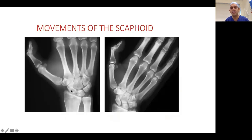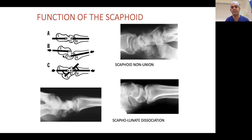Regarding movements and function: as you go from radial deviation to full ulnar deviation, the scaphoid goes from flexion to full extension — which is the basis of your Watson-Kirk test. When doing an x-ray to pick up a scaphoid fracture, if given only one view, ask for a PA wrist view with ulnar deviation. The scaphoid functions as a link between the proximal row and distal row.